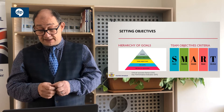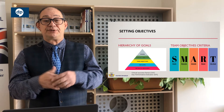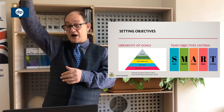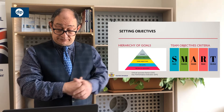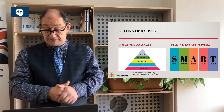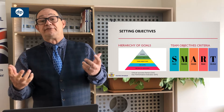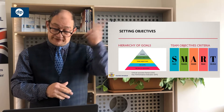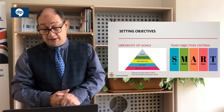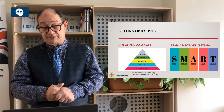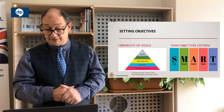Achievable means the goals have to be realistic — it is counterproductive to set objectives you know you cannot achieve. R stands for Relevant: there's no point doing something that has nothing to do with the goals of the company. T stands for Time-bound: you have to have a timeframe for it. You can't just say we'll achieve it eventually — there has to be a deadline. Once those are set for our team, those become the overall objectives of the team.